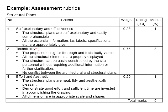The second aspect we are looking at is technicality, where the proposed design is thorough and technically viable. That means the design is complete, covering every single scope, and the necessary design considerations are addressed. It should be technically viable — achievable, safe, and stable in accordance with engineering principles. All the structural elements are properly displayed, as this involves detailing of the structures, and it should be the outcome of the design and analysis done through the assignment.